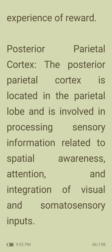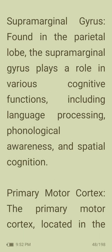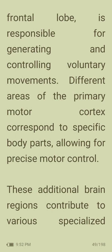Posterior parietal cortex: located in the parietal lobe, involved in processing sensory information related to spatial awareness, attention, and integration of visual and somatosensory inputs. Superior temporal gyrus: situated in the temporal lobe, involved in auditory processing, language comprehension, and higher-level visual processing. Supramarginal gyrus: found in the parietal lobe, plays a role in language processing, phonological awareness, and spatial cognition. Primary motor cortex: located in the frontal lobe, responsible for generating and controlling voluntary movements, with different areas corresponding to specific body parts for precise motor control.